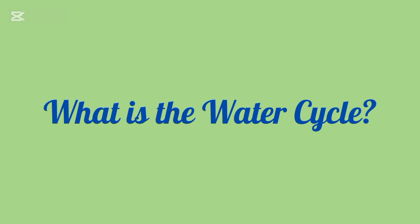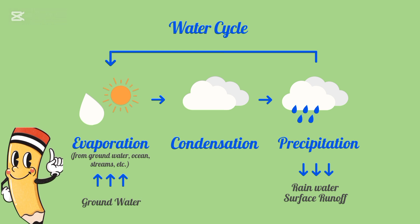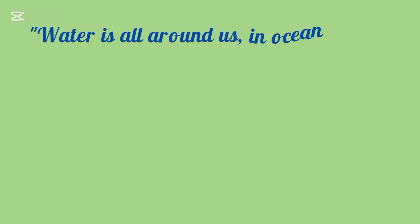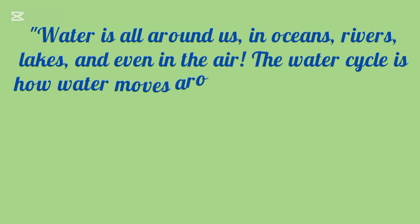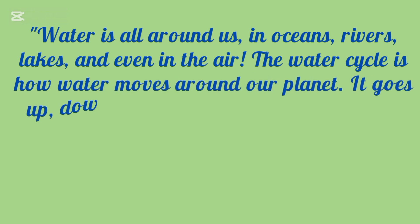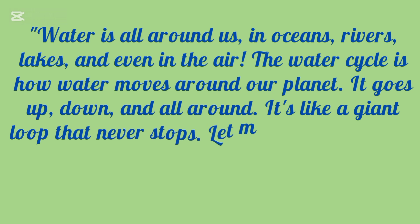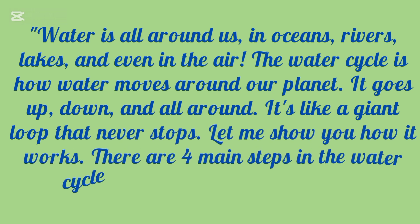What is the water cycle? Water is all around us in oceans, rivers, lakes, and even in the air. The water cycle is how water moves around our planet. It goes up, down, and all around. It's like a giant loop that never stops.